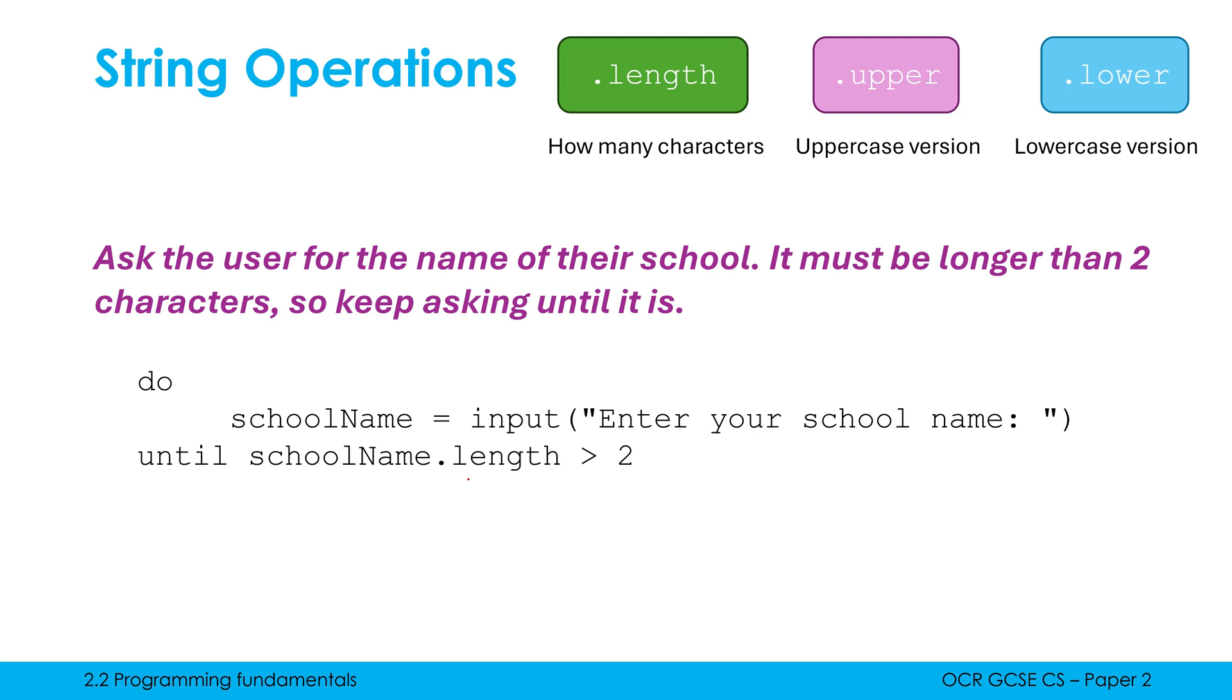So I'm using do until here, you could use a while loop. I'm asking for the school name, user input is always a string, so school name is a string, and I'm using dot length to calculate how long this input is. If it's greater than two, that means it's valid, that means we can continue. If it's not greater than two, the do until loop will just repeat and repeat and repeat until it is eventually longer than two characters.